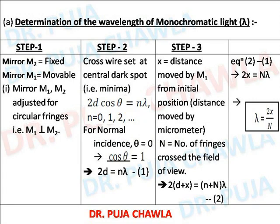Now the very first application: determination of lambda. Step 1 — mirror m2 is fixed, mirror m1 is moving. We set the apparatus for circular fringes, that is m1 is perpendicular to m2. Step 2 — set the cross wire on the central dark spot. Dark meaning minima; condition of minima: 2d cos theta equals n lambda. Now consider normal incidence, meaning theta is 0 and cos theta is 1. So the equation of minima becomes 2d equals n lambda. This is equation number 1.